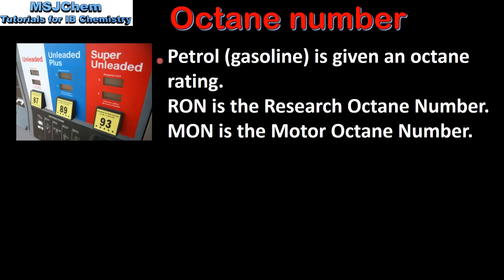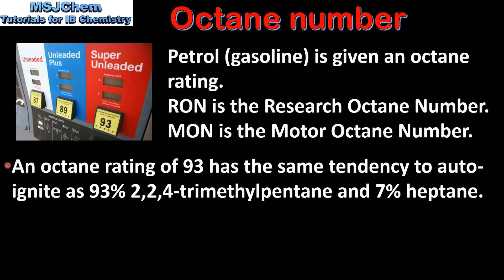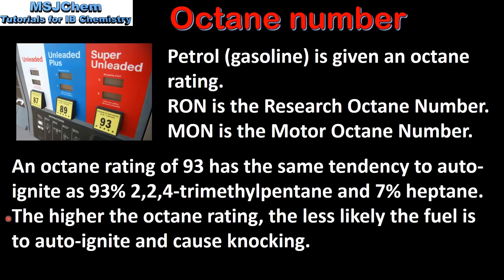Petrol or gasoline is given an octane rating, and different octane ratings are used in different countries. There is RON, which is the research octane number, and MON, which is the motor octane number. On the left we have a picture of a petrol or gasoline pump that gives the octane rating of each fuel. Normal unleaded has an octane rating of 87 and super unleaded has an octane rating of 93. A fuel with an octane rating of 93 has the same tendency to auto ignite as a mixture of 93% 2,2,4-trimethylpentane and 7% heptane. The higher the octane rating, the less likely the fuel is to auto ignite and cause knocking.